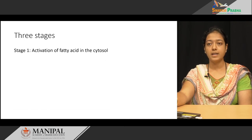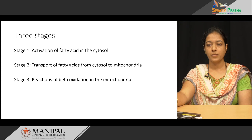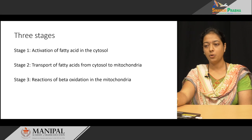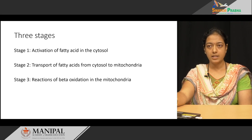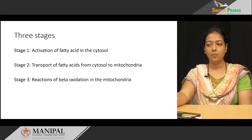There are three stages in beta oxidation. Stage 1 is the activation of fatty acid, which takes place in the cytosol. Stage 2 is the transport of fatty acid from the cytosol to the mitochondria. Stage 3 is the reactions of beta oxidation proper in the mitochondria.